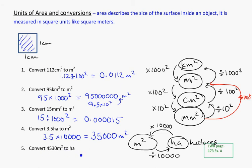And the other way around, this time going from meters squared to hectares, we need to divide by 10,000. So 4,530 divided by 10,000 equals 0.453 hectares.